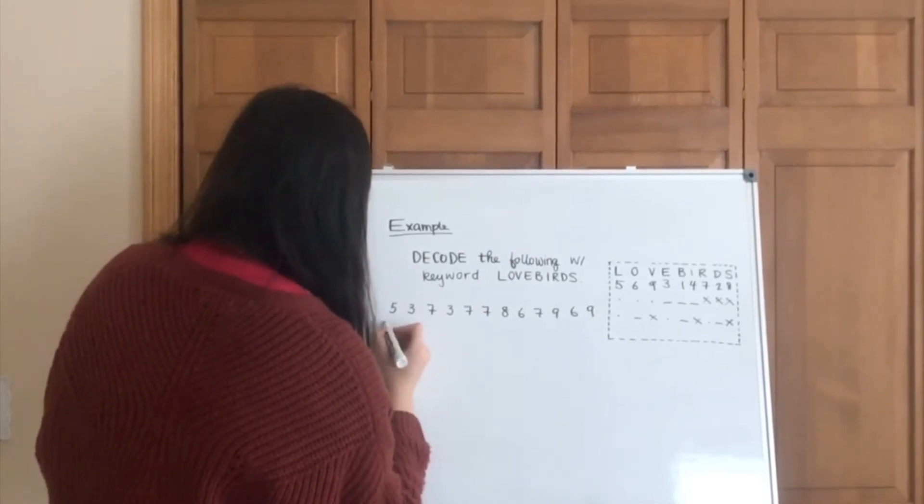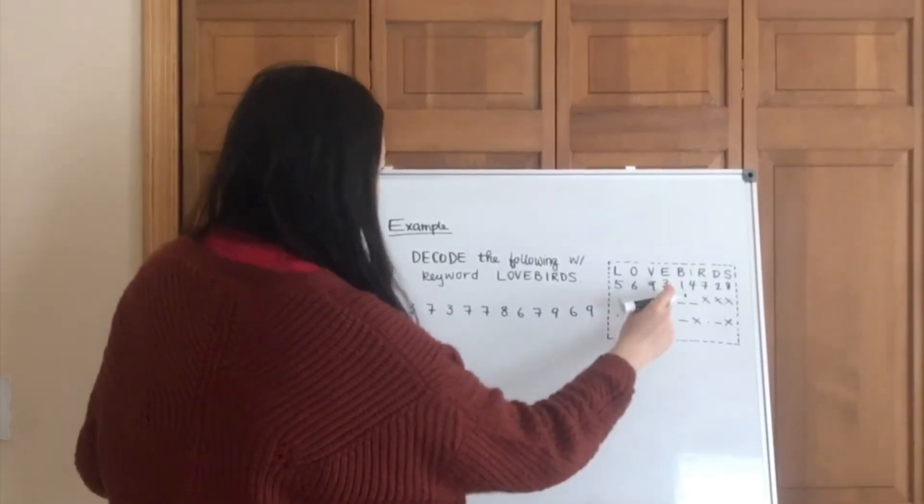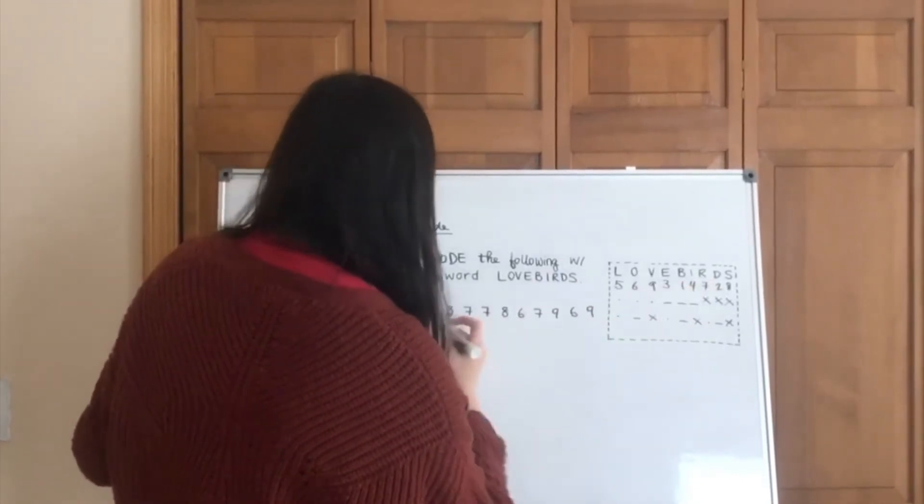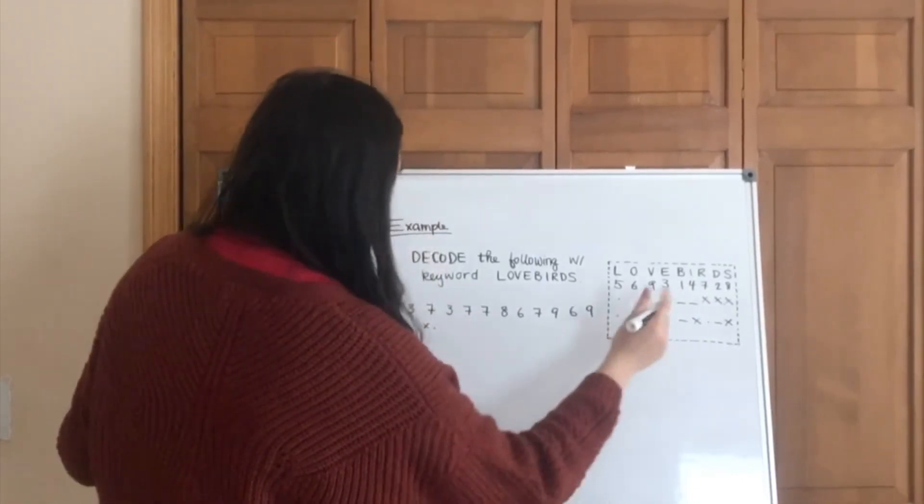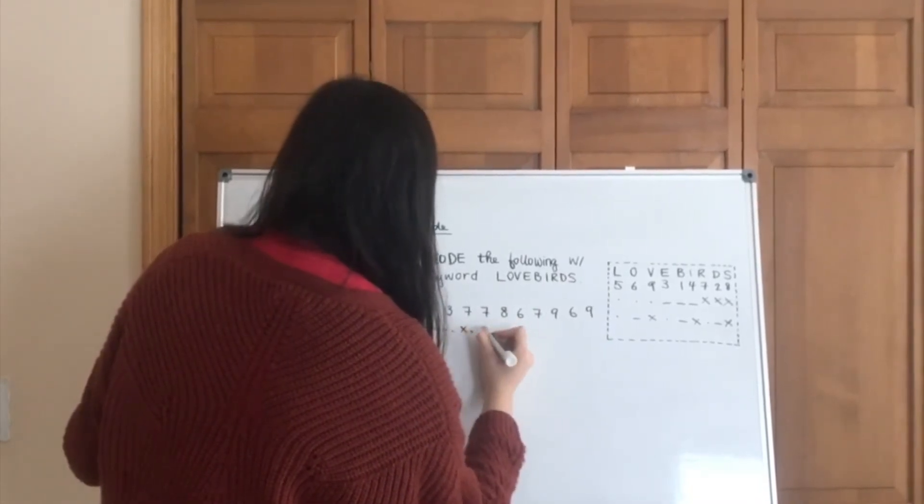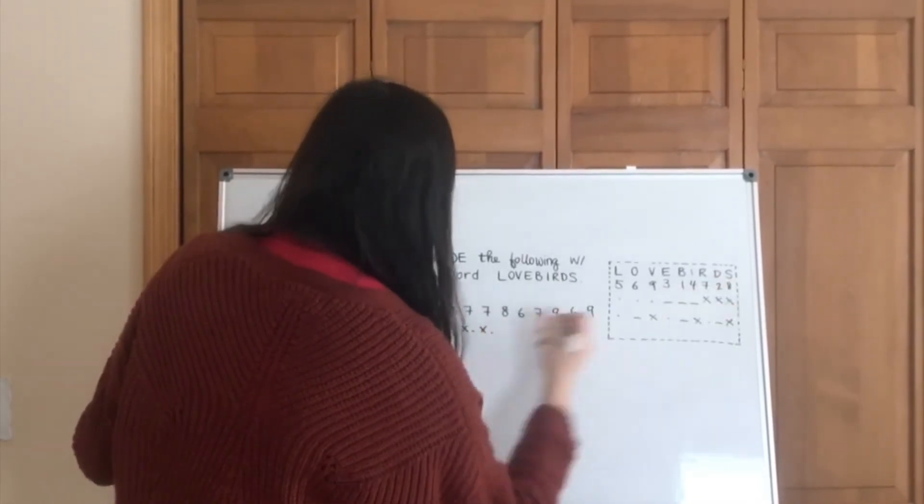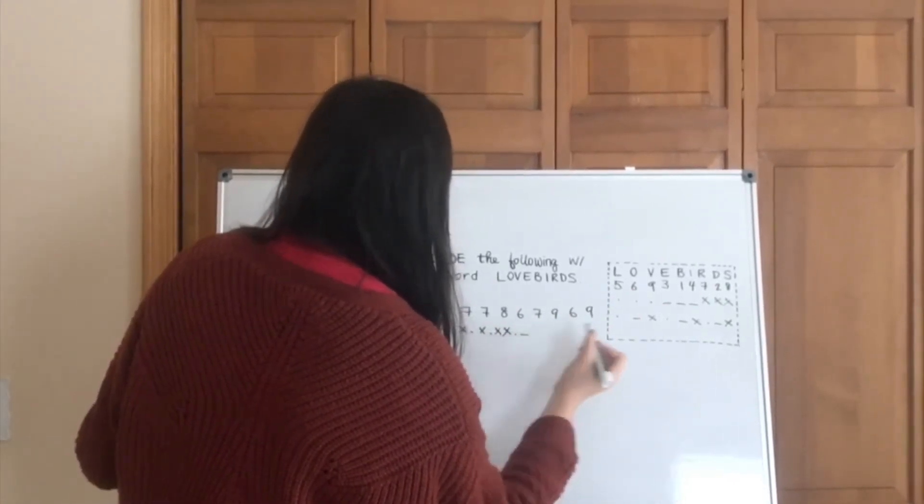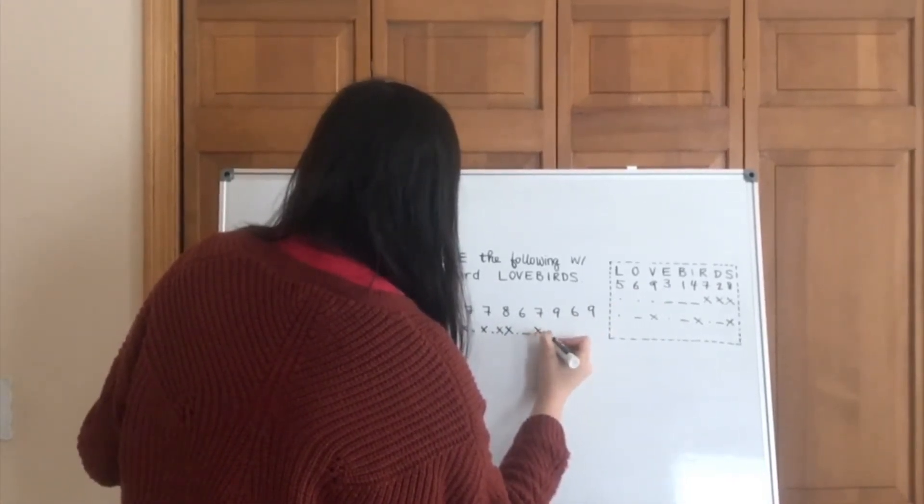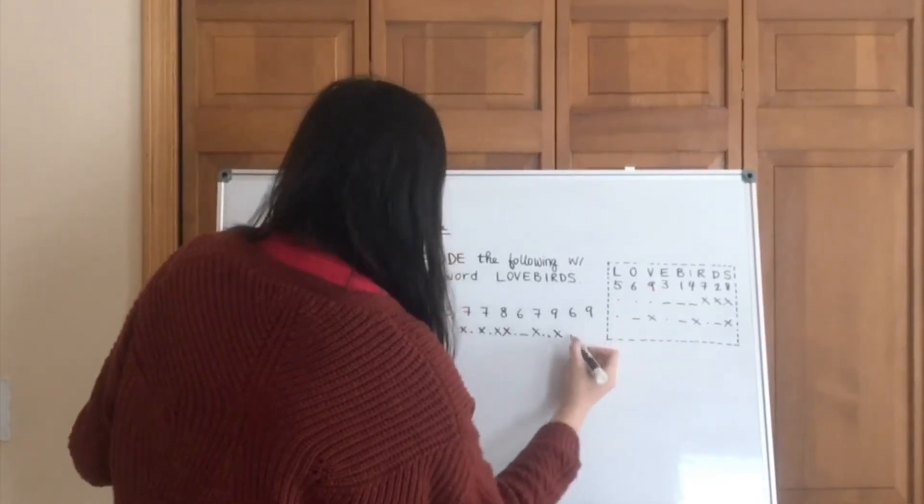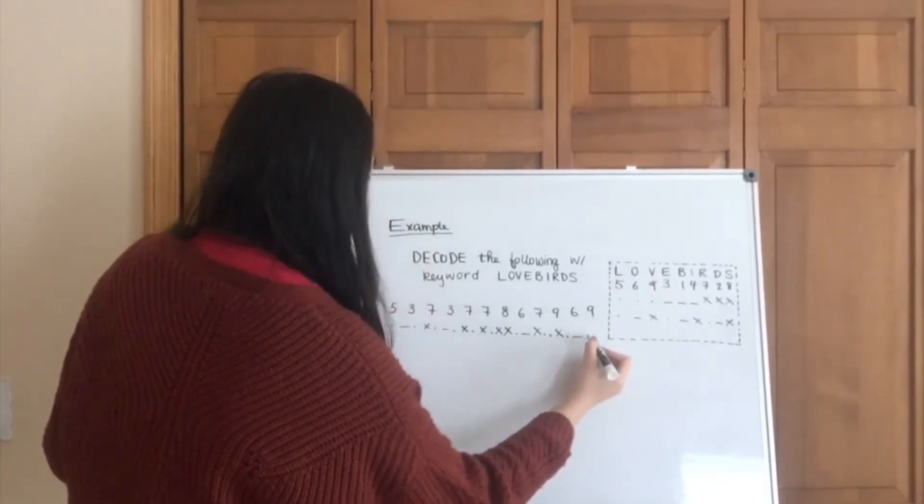So we see that five here is a double dot, three is dash dot, seven is x dot, three again, seven, seven, eight double x, six, seven, nine, six, and nine.